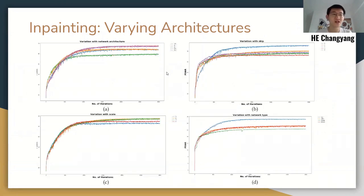From this figure, we can see the experiment result of inpainting with a variation of network architecture, skip, scale, and network type. Generally, wider and larger models generate better results. Skip network outperforms other models, and no skip outperforms skip connections. That means plain FCN achieves the best performance.